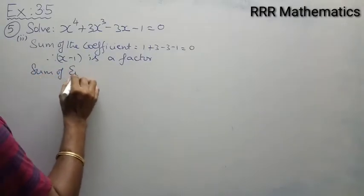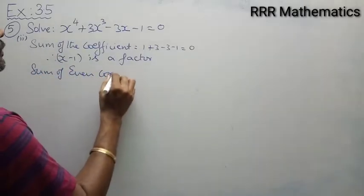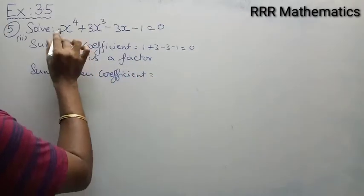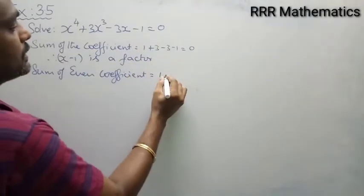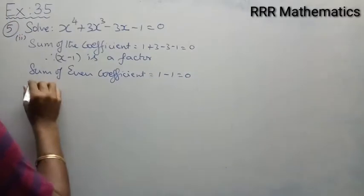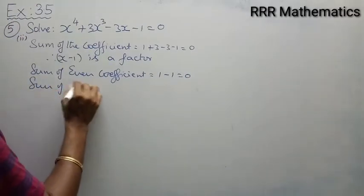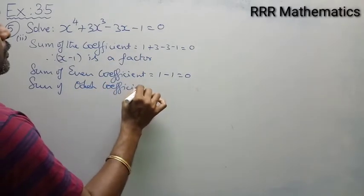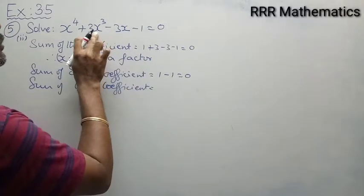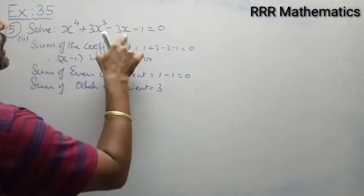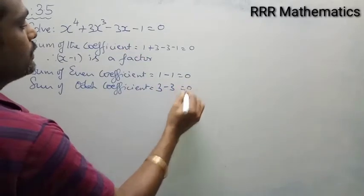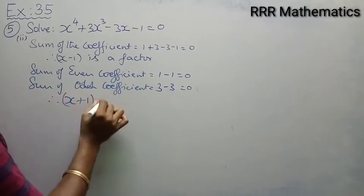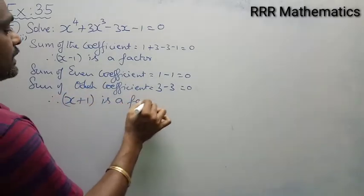Sum of even coefficients: x⁴ coefficient is 1 and constant is -1, which gives 0. Sum of odd coefficients: x³ coefficient is 3 and x coefficient is -3, which gives 0. Therefore, x + 1 is a factor.